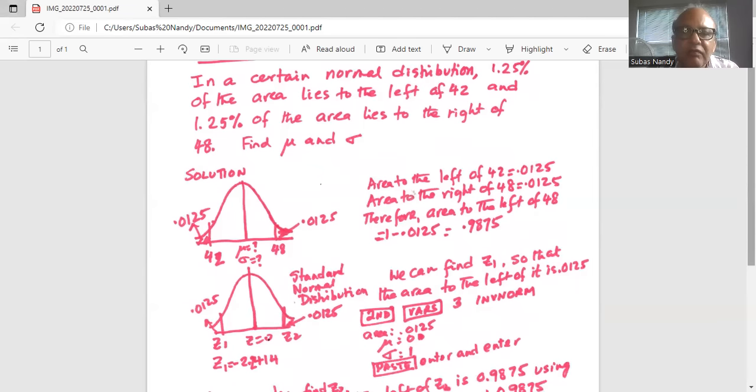Since we know the area to the left of Z1 is 0.0125, we can use the inverse norm function in the calculator to find the value of Z1, which is the standard normal variable corresponding to 42. So we press the second key in the calculator TI-84, then the VARS key, and then select option 3 which is invNorm.